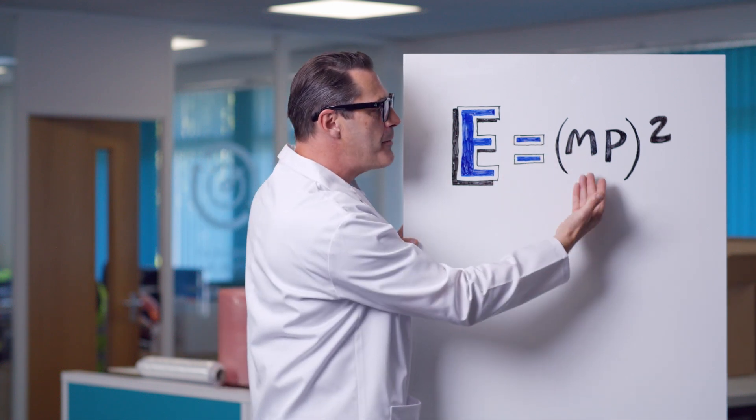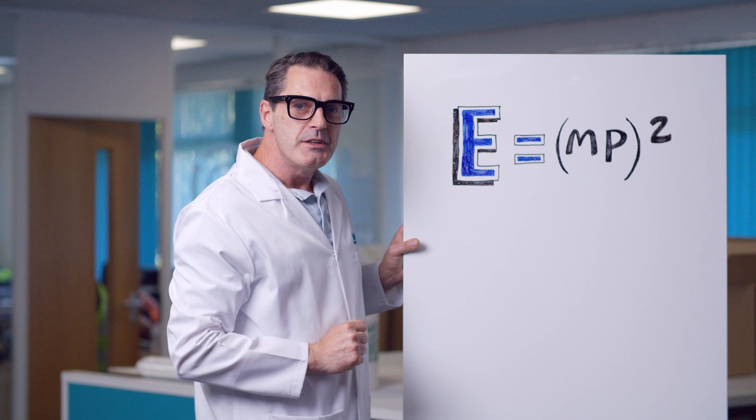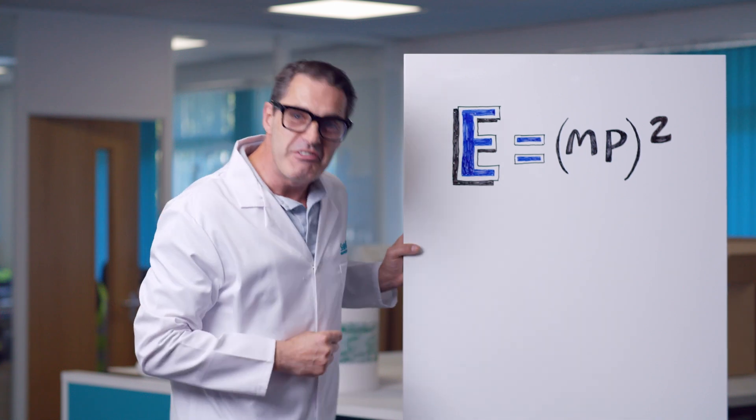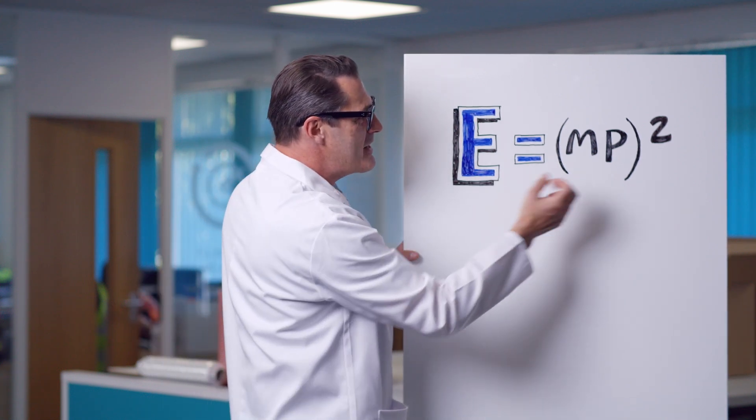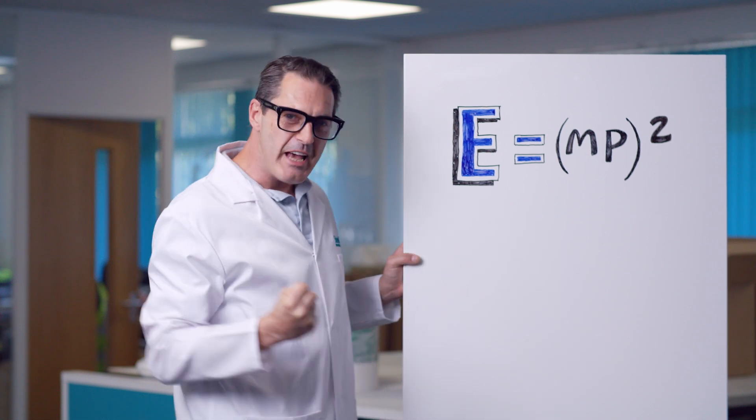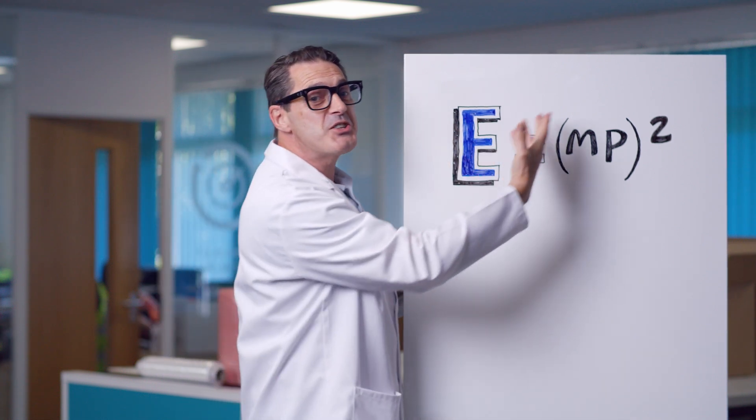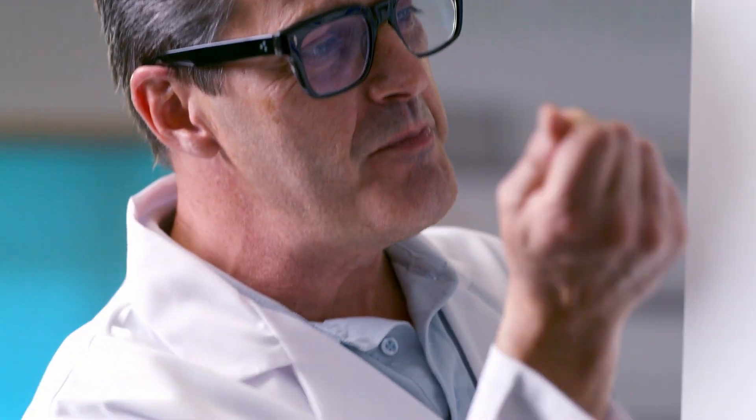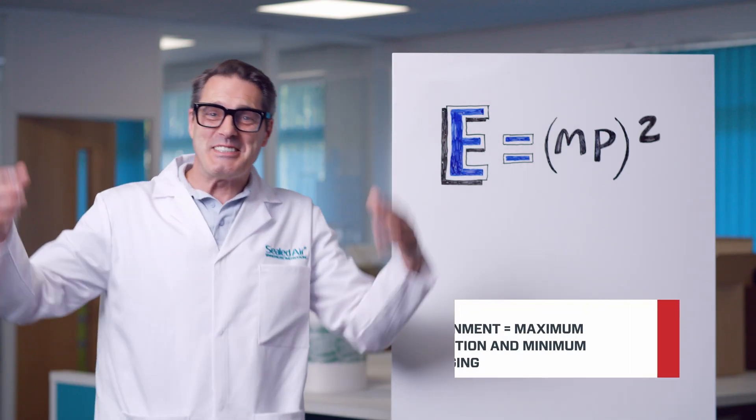So, E equals MP squared. E stands for environment, and MP stands for maximum protection. And of course, the MP is squared, so it has two meanings. It also means minimum packaging. Genius. I know.